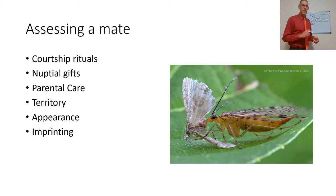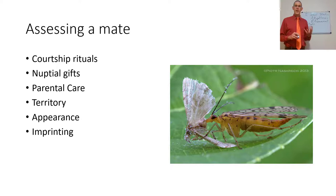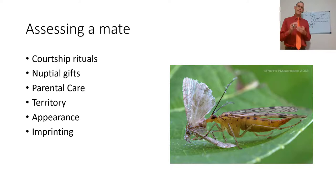Then there are nuptial gifts. The scorpion fly is an example: he brings the female a prey that he has captured, which indicates the male is capable of capturing prey. More proximally, it is nutrition that can increase the amount of eggs laid. So by feeding the female, she can produce more eggs. The bigger the gift the male can offer, the more the female will actually increase his fitness by laying more eggs inseminated by him.